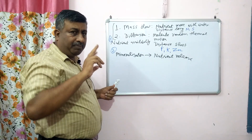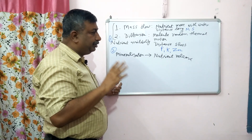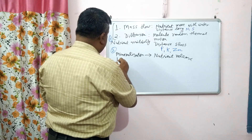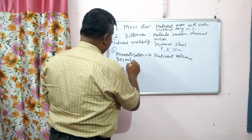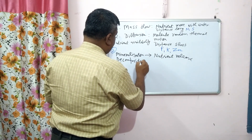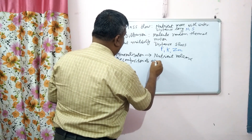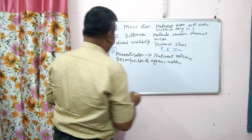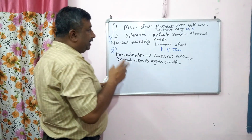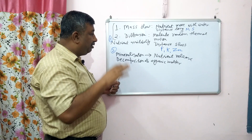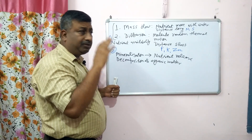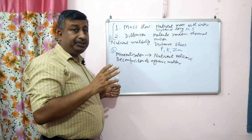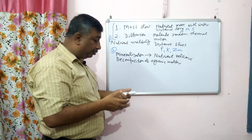There are two important mechanisms: number one, nutrient availability via mass flow and diffusion; number two, nutrient release through mineralization, which means decomposition of organic matter. Temperature has influence on mineralization as well as on mass flow and diffusion, which is why temperature plays a very important role in nutrient availability and plant growth.